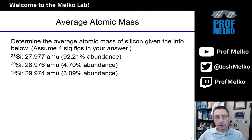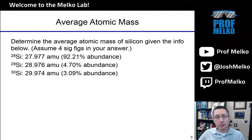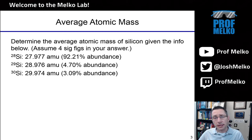Up next, we're going to get into average atomic mass. The atomic masses listed on the periodic table are an average of all the isotopes of that element. That's why carbon's atomic mass is slightly higher than 12 on the periodic table — larger isotopes pull that average mass up. We can determine the average atomic mass of silicon given three different isotopes, three different abundances, and three different masses. We use the weighted average approach.